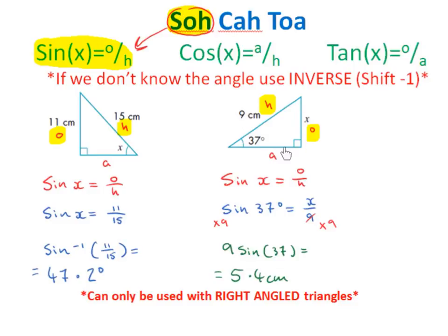In the next example, we label our triangle the same way: the longest side is labelled h — that's 9 centimetres. The side opposite the angle is labelled o — that's x — and the other side is labelled a. We're using h and o, so again we go with SOH, which is sine of x equals o over h. We write out the formula, then substitute: swapping x for 37 degrees, o for x, and h for 9.